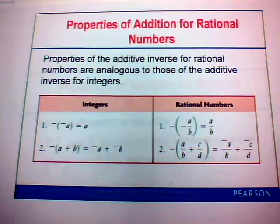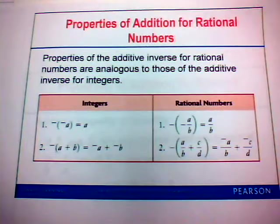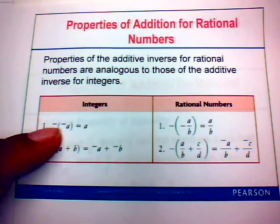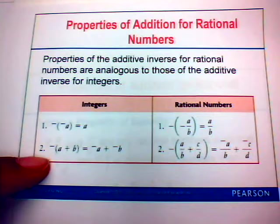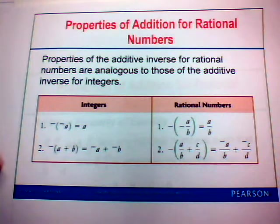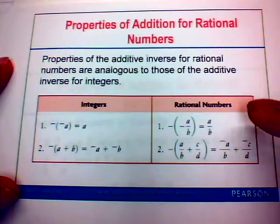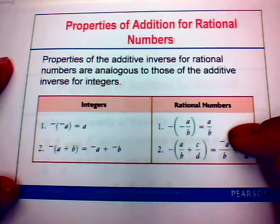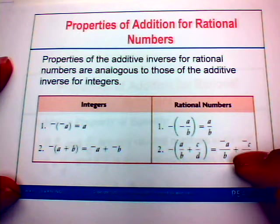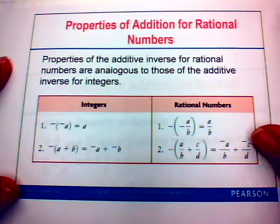Properties of the additive inverse for rational numbers are analogous to those for integers. For integers, the opposite of negative a is a, and the opposite of the sum of a and b is the opposite of a plus the opposite of b. This is the same for rational numbers: the opposite of negative a over b is positive a over b, and the opposite of the sum of a over b and c over d is the opposite of a over b plus the opposite of c over d.